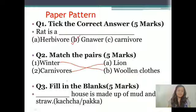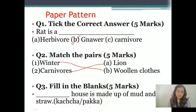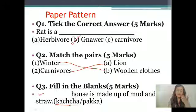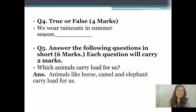Our question number 3 is fill in the blanks. Aapko blank diya jayega ek, aur uske saath aapko 2 options bhi honge, aur aapko right option ko tick karna hai aur likhna bhi hai. For example: a dash house is made of mud and straw — mitti se aur ghaas se kaunsa ghar banta hai? Kaccha house. Toh hum kaccha house ko yahan likh denge.